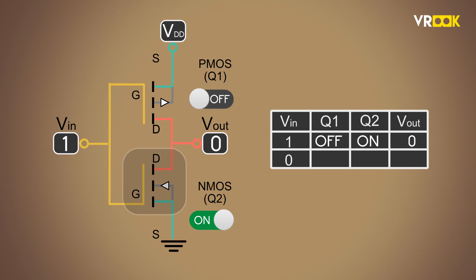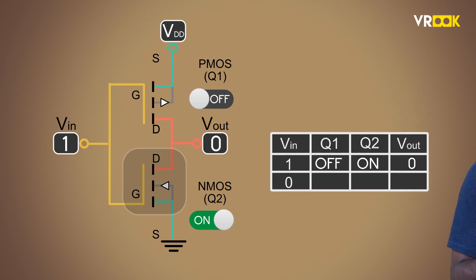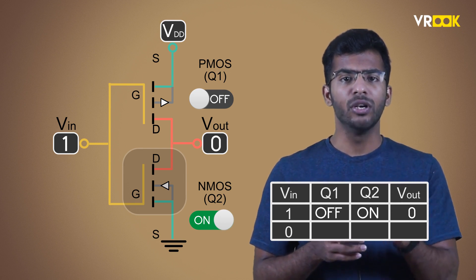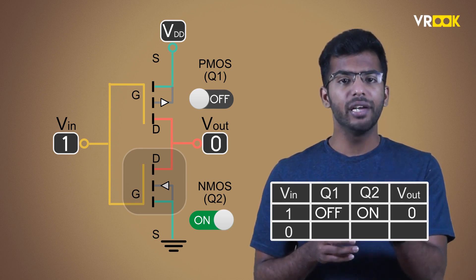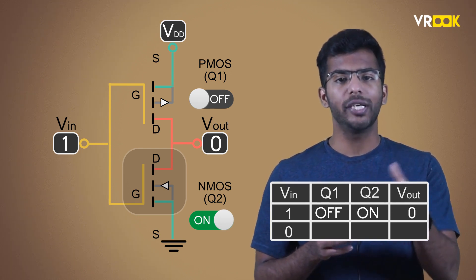Because of this, the output will be 0. NMOS acts as if it is short-circuited. Hence, the output is low or logic 0. This is case 1 where the logic 1 or high voltage at input gives the logic 0 or low voltage at output.